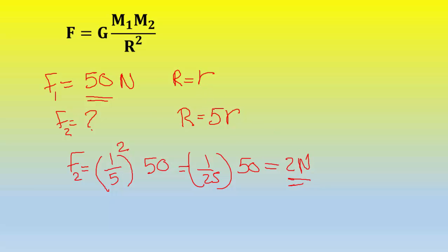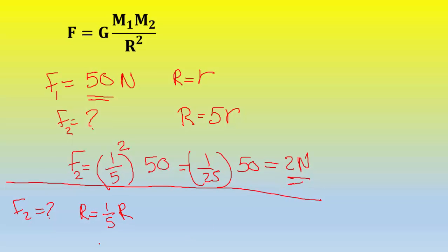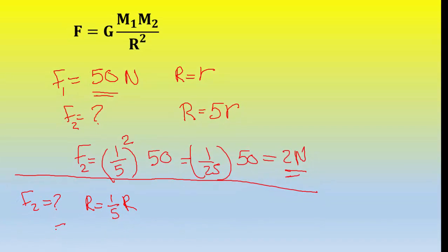Now what happens if you decrease the distance to one-fifth r? What will be f2 if the distance r is now (1/5)r? You take the inverse square of 1/5: the inverse of 1/5 is 5, then you square it — 5² = 25 — times the initial force.